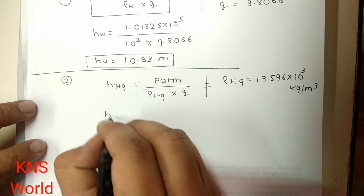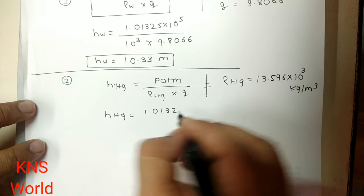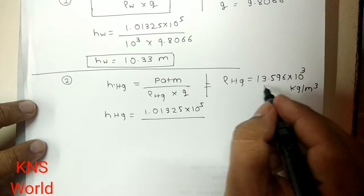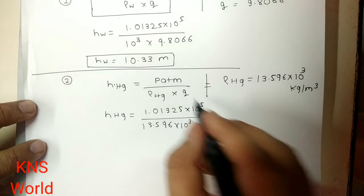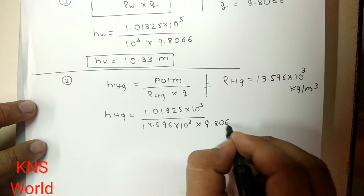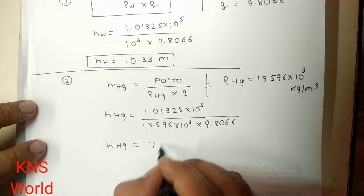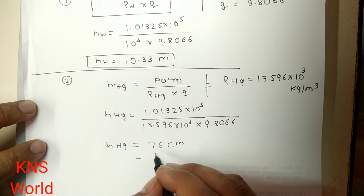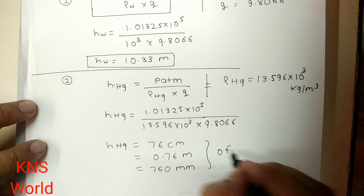So if we put all the values, P atmosphere is equal to 1.01325 into 10 raise to 5, divided by this value 13.596 into 10 raise to 3 into g that is 9.8066. So if we calculate, then we get the value that is 76 cm or 0.76 meter or 760 mm of Hg.